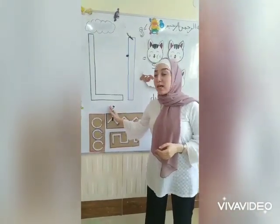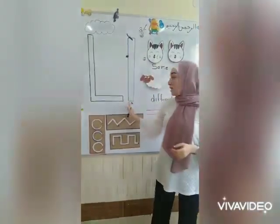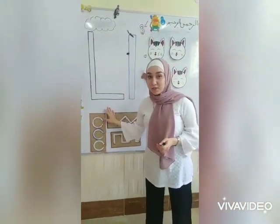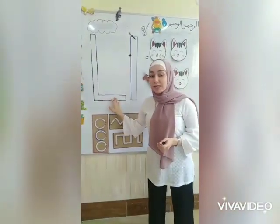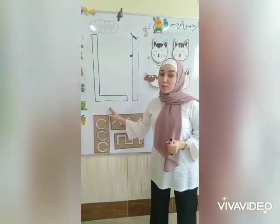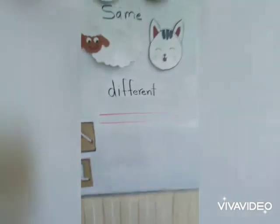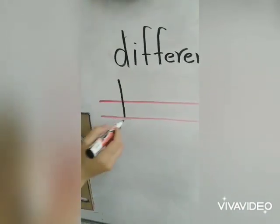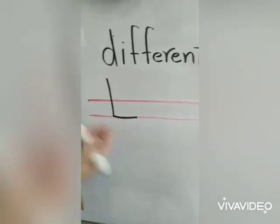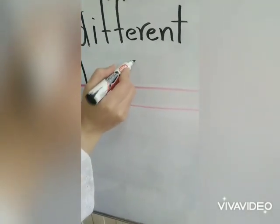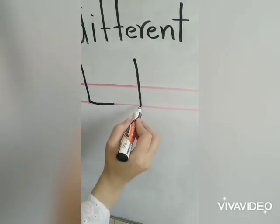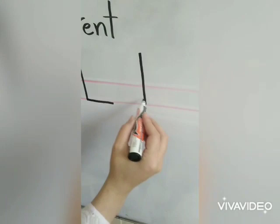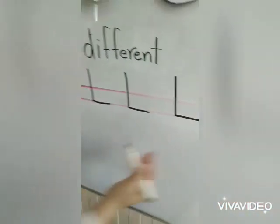Today we're going to practice writing upper case L and lower case L. Are they the same or different? They are different. Lower case L is different from upper case L. So, the first letter we're going to do is the upper case L. We start at the top, draw a straight line down, go to the bottom, draw a straight line across. Upper case L.